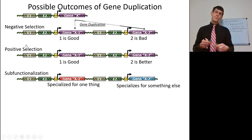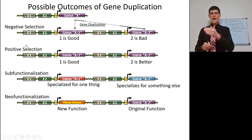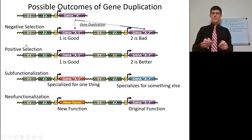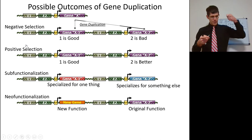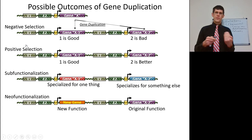A gene family is when duplicated genes derive from one another. Neo-functionalization is when mutations give one copy of the gene a new function — like turning a knife into a spatula by flattening it and making it broader. Instead of two knives, you have a spatula and a knife; you've changed the function of one of those genes through mutation.